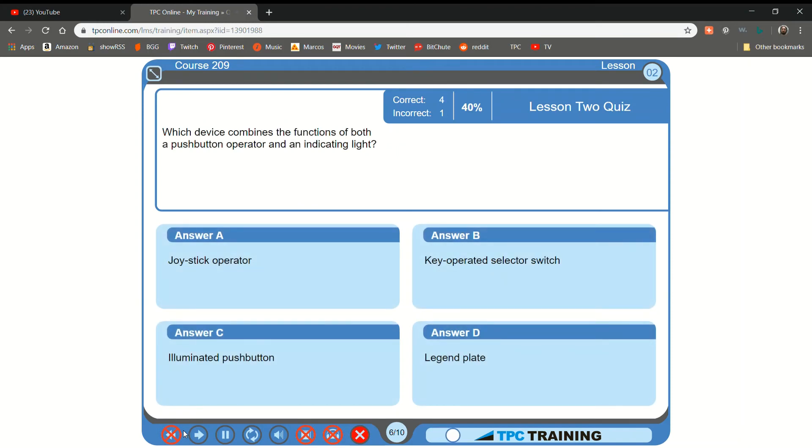Which device combines the functions of both a push-button operator and an indicating light? A. Joystick operator... B. That is correct.